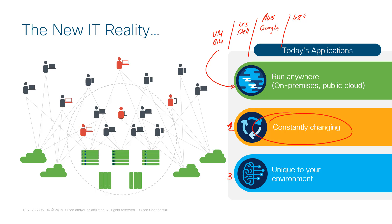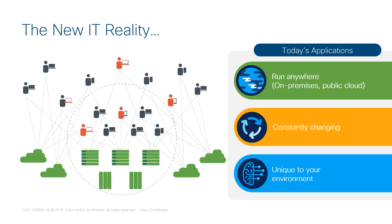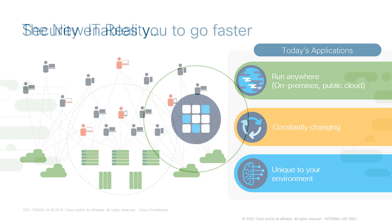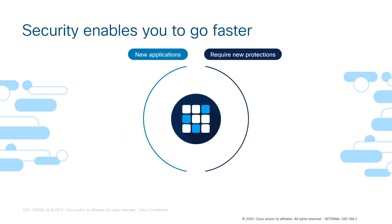The deployment and use of an application will always vary based on user, department, and customer. Application visibility, security, and segmentation is a journey — but despite all of these challenges, that doesn't mean the journey has to be an overly complicated one.